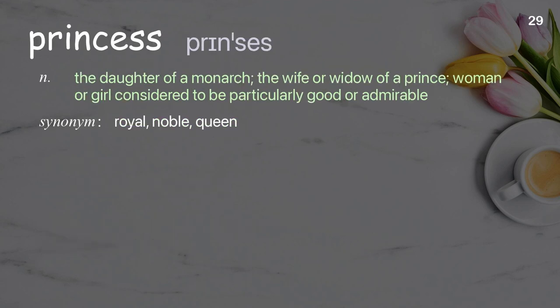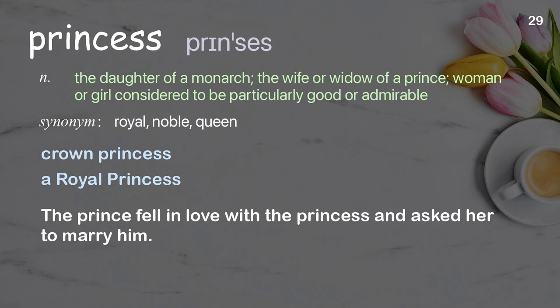Princess: The daughter of a monarch; the wife or widow of a prince; a woman or girl considered to be particularly good or admirable. Examples: crown princess, a royal princess. The prince fell in love with the princess and asked her to marry him.